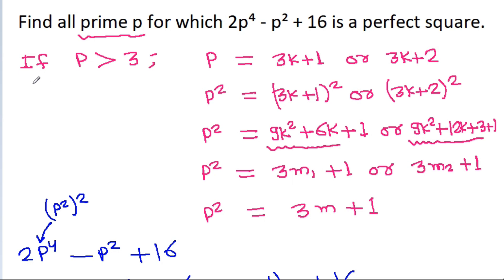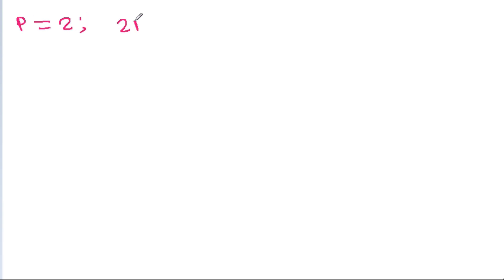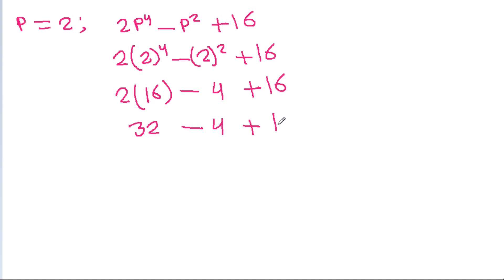So we are left with the prime numbers p = 2 and p = 3. For p = 2: 2(2⁴) - 2² + 16 = 2(16) - 4 + 16 = 32 - 4 + 16 = 44. And 44 is not a perfect square.